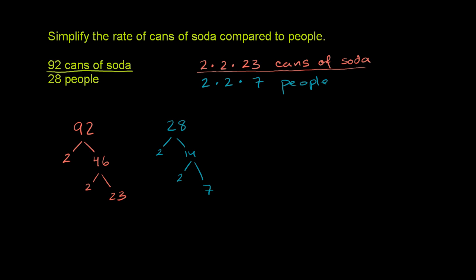If you divide the top number by 4, or if you divide it by 2 times 2, it will cancel out right over there. And if you do the bottom number divided by 4, or 2 times 2, it will cancel out with that 2 times 2. And we are left with 23 cans of soda for every 7 people,